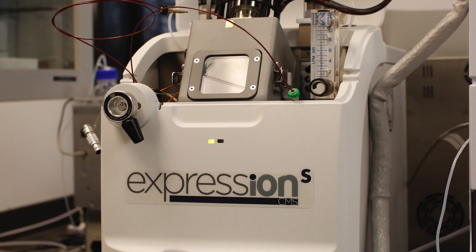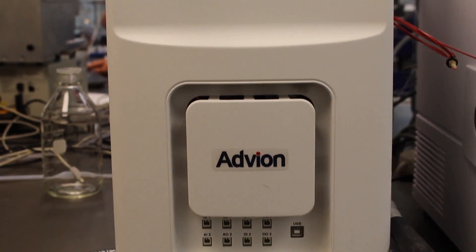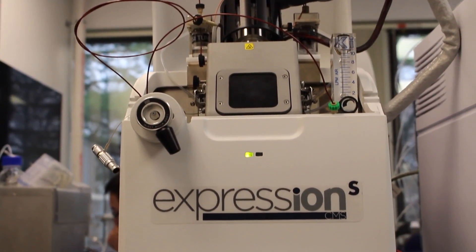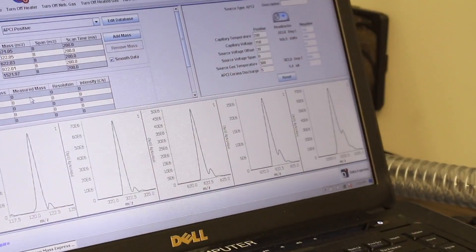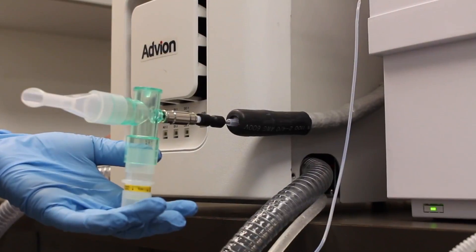Volatile Atmospheric Pressure Chemical Ionization, or VAPCI, combined with Advion's Expression Compact Mass Spectrometer is a fast and easy method to analyze volatile samples.